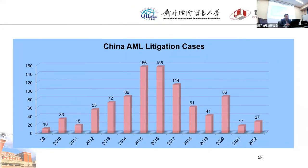AML litigation cases have grown from 10 cases at the start to a peak of 156 cases in 2015, then dropped a little due to COVID. With the new interpretation, cases are expected to rise again.